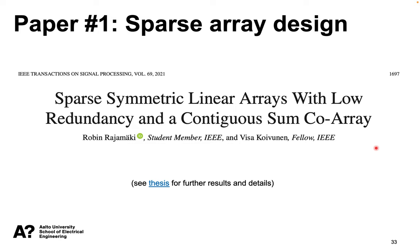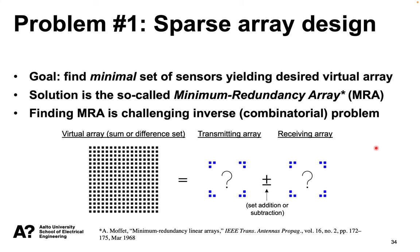A key property of the array configurations we derive is that their symmetry allows us to achieve equivalent sum and difference sets, making them useful for both passive and active sensing. In contrast, many conventional configurations are not symmetrical and are typically only designed for a contiguous or uniform difference co-array, making them mostly useful for passive sensing.